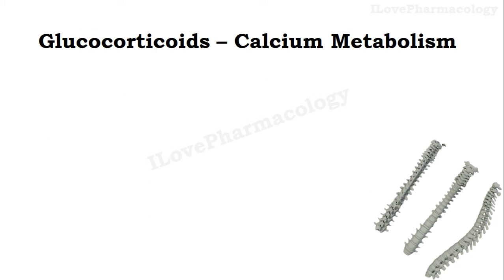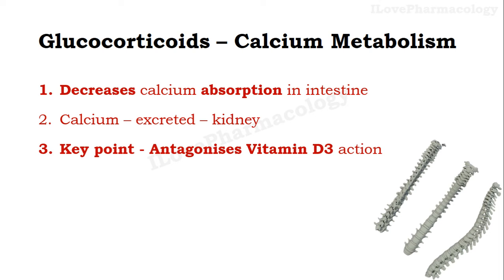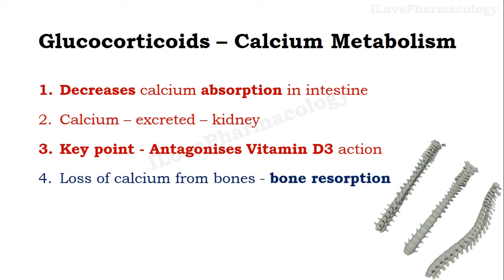Coming to glucocorticoids on calcium metabolism — basically it decreases the calcium levels in the body. It decreases calcium absorption in the intestine, thereby increasing calcium excretion through the kidney. The key point to remember is that these glucocorticoids antagonize the vitamin D3 action. Vitamin D3 functions to increase the absorption of calcium in the intestine. Along with this, there will be loss of calcium from the bone leading to bone resorption, and these glucocorticoids will also amplify parathyroid activity.